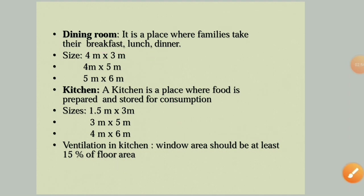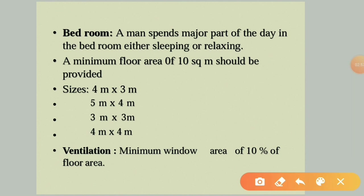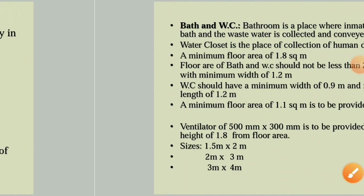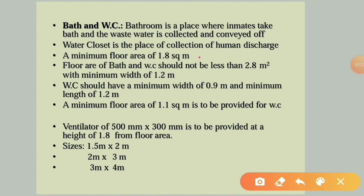Bedrooms are rooms where people spend a major part of their time — sleeping or relaxing, often 6 to 12 hours per day. The minimum floor area is 10 sq.m and common sizes are 4×3, 5×4, 3×3, or 4×4 meters. The minimum window area should be 10 percent of the floor area to ensure good lighting and air circulation.